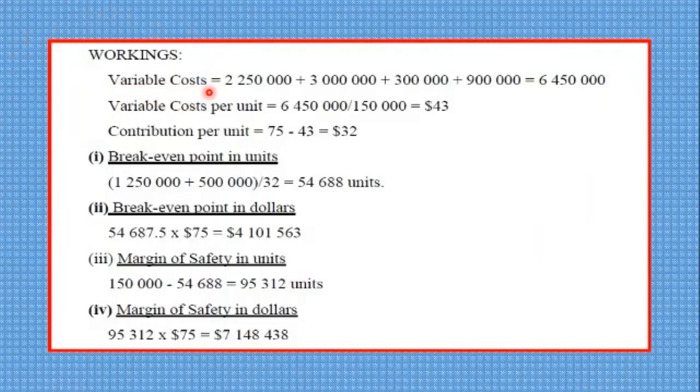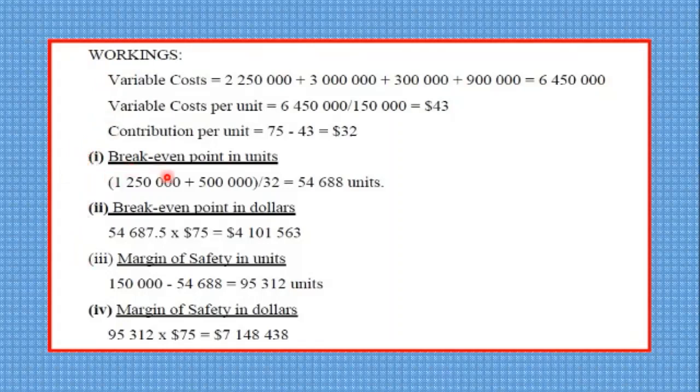So first we compute the variable costs by adding all the variable costs together. Notice I have added up these here - workings. And when we get into the answer, working on the answer, I have that separate. Okay. So the variable costs, we add all together, and we get $6,450,000. The variable cost per unit then would be this figure here over $150,000, which is equal to $43. And the contribution per unit would be the selling price of $75 minus the variable cost, and we'll get $32 as contribution, $32.